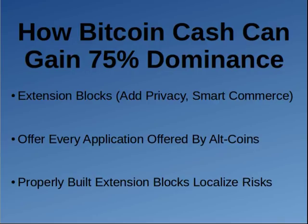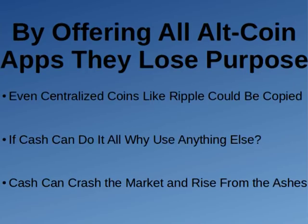Bitcoin Cash can also add smart contracts, so things like Ethereum become redundant. One of the big market plays I think they should make is to copy a centralized coin like Ripple. Everyone's asking how Ripple makes money when they're just an application and technically their currency isn't a cryptocurrency. What if Bitcoin Cash were to literally copy the Ripple application and allow anyone to use it on Bitcoin Cash through their smart contract system?